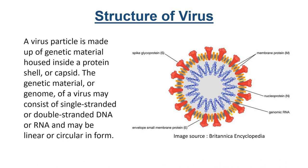A virus is made up of just genetic material. The genetic material could be DNA — either a single strand or a double strand — or it may be in the form of RNA, which may be linear or circular in shape. As shown in the image on your screen, RNA represented in blue is the hereditary material of this particular virus. This hereditary or genetic material is covered by a protein shell known as a capsid, which is made up of protein, and sometimes some lipids may also be present.